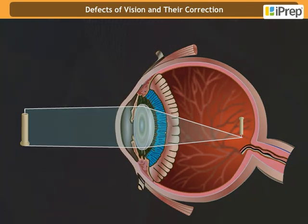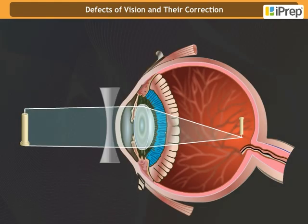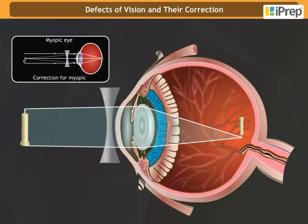A concave lens of suitable power brings the image back onto the retina and thus the defect is corrected.